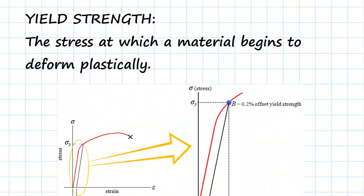Okay, so firstly to have a look at the difference between yield and tensile strength. Yield strength is the stress at which a material begins to deform plastically.